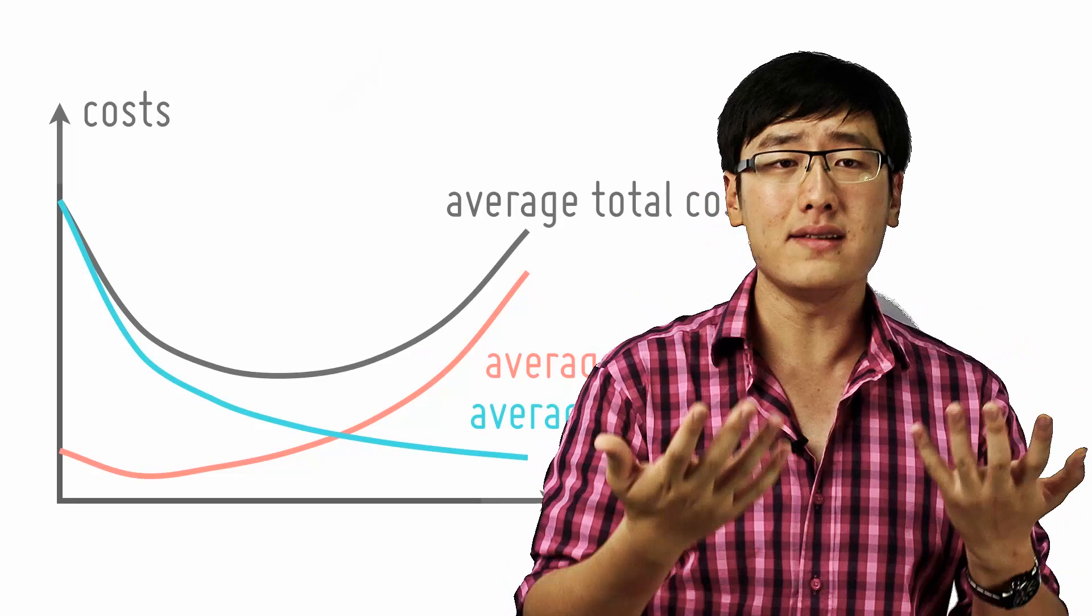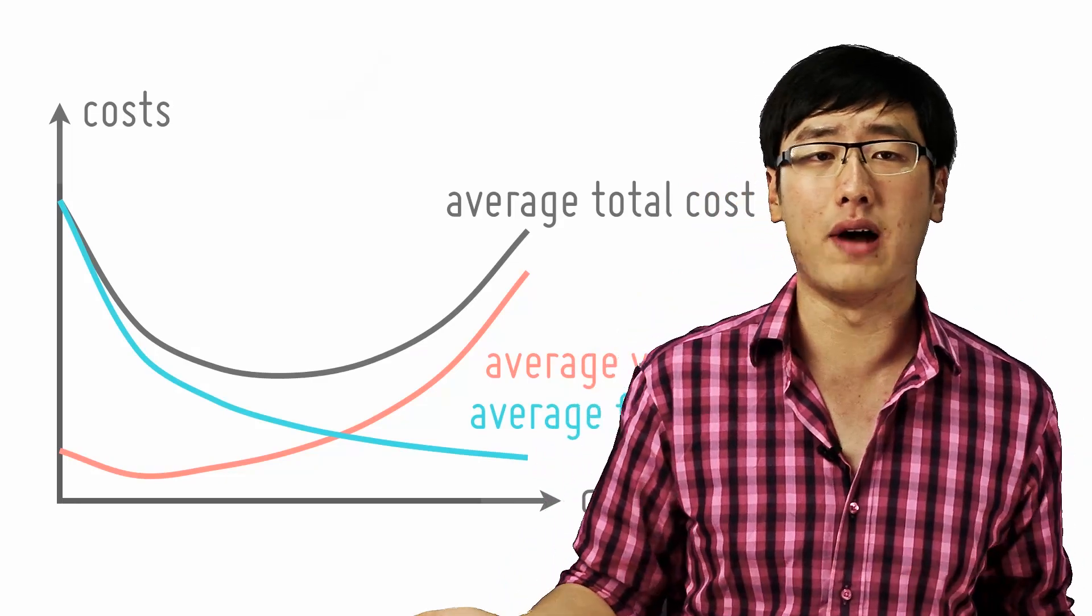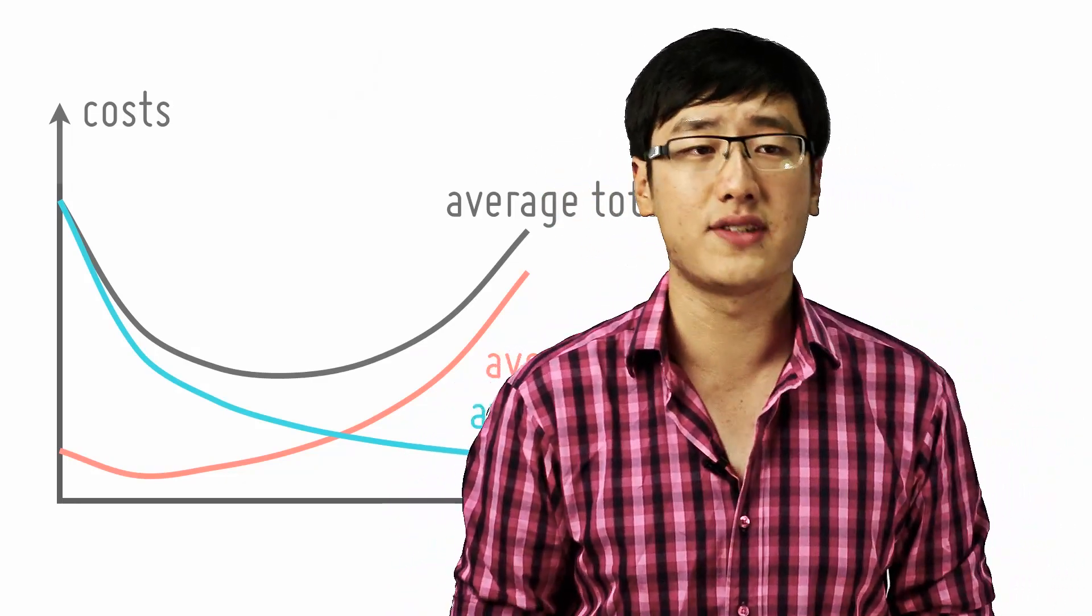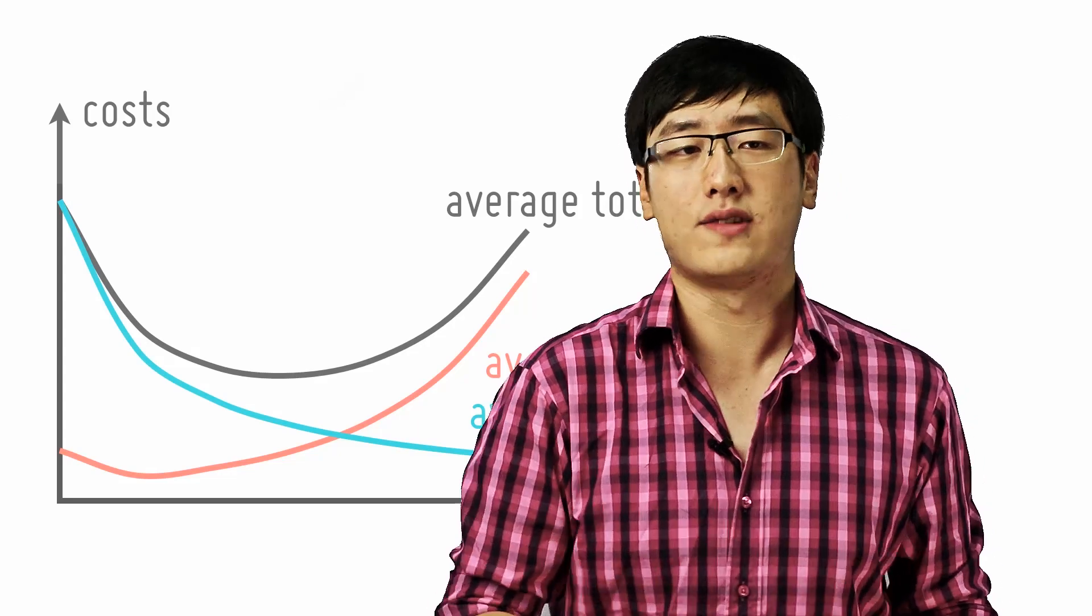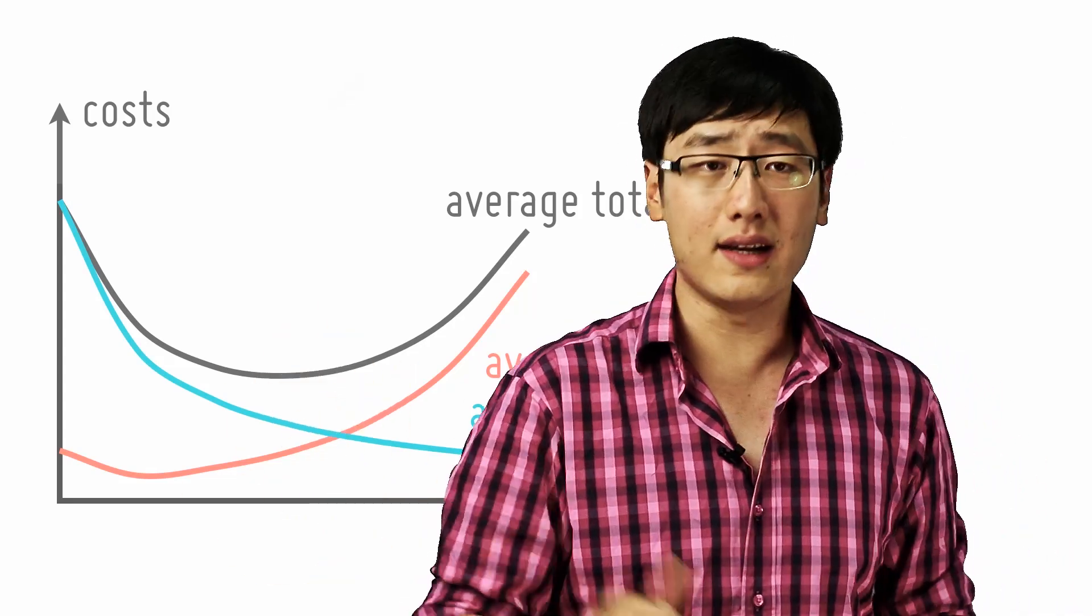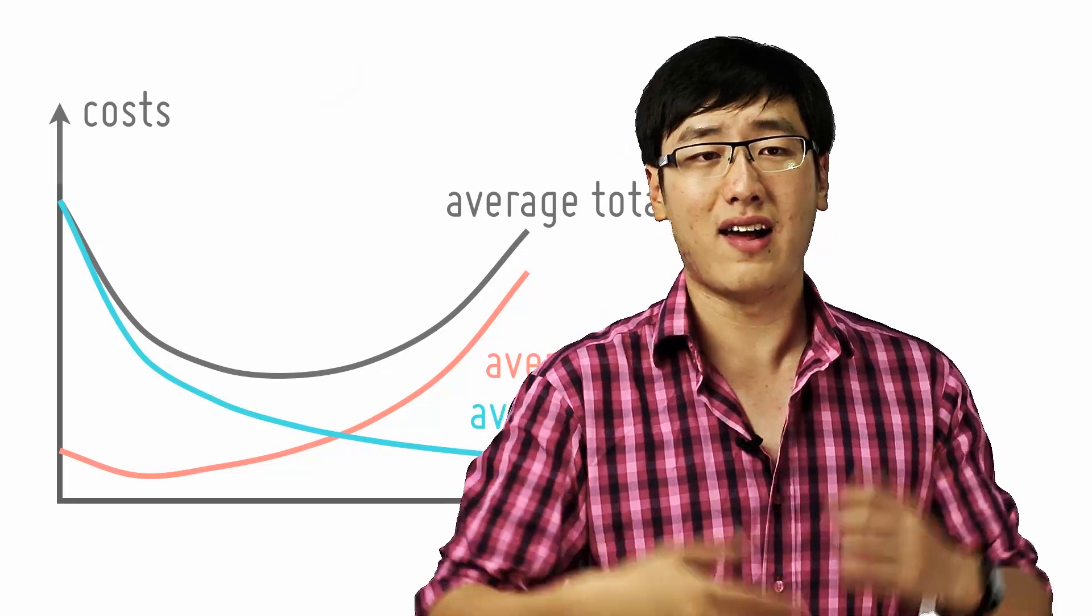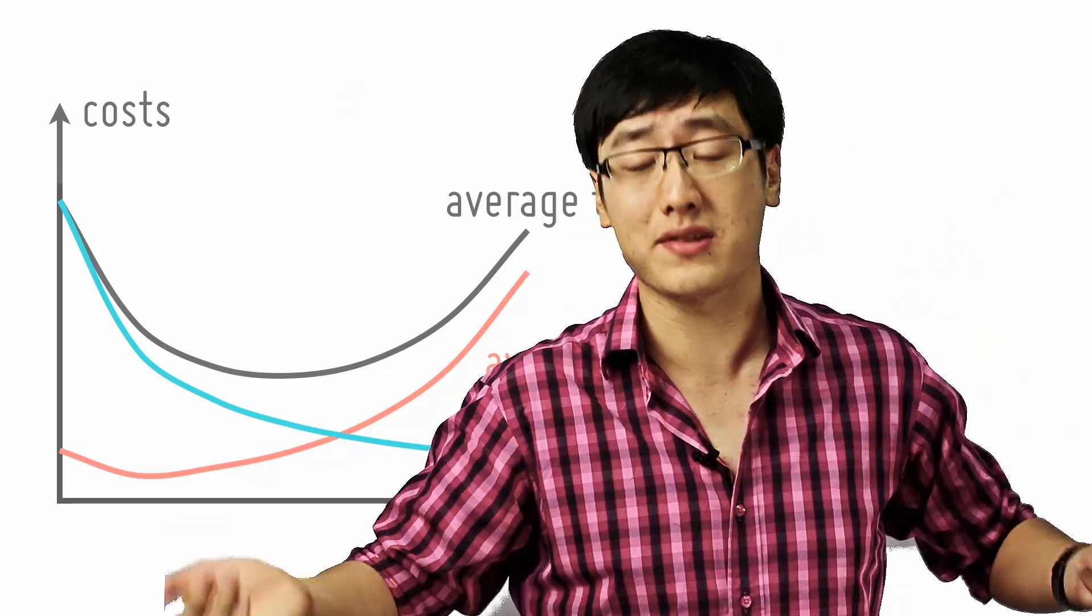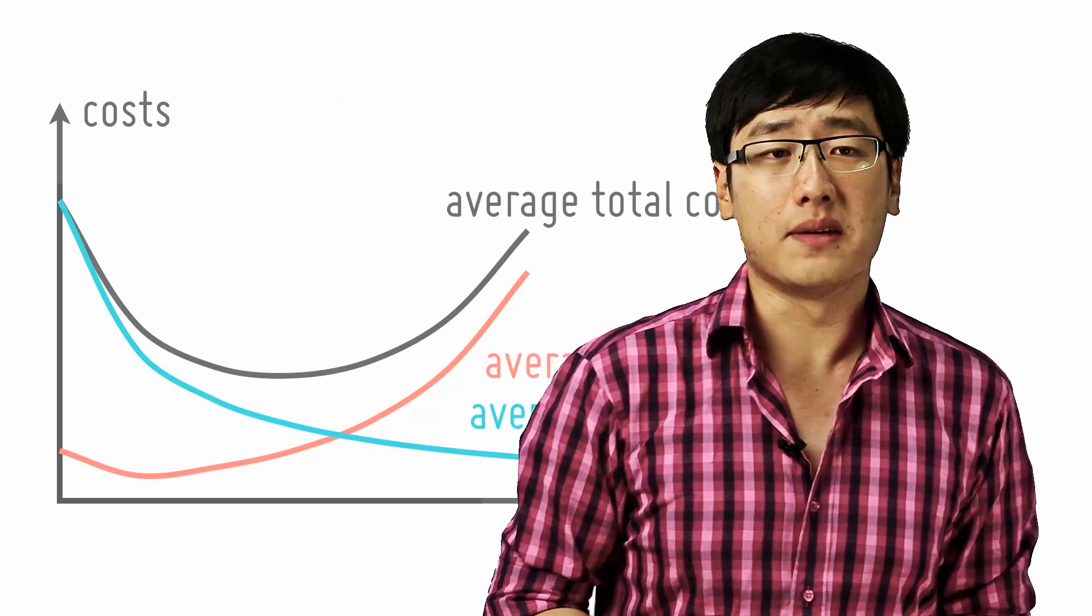But the AC is basically the simple addition of the AVC and the AFC. The average variable cost and the average fixed cost. You realize that the average fixed cost decreases to nearly zero. Nearly, it never touches because a number divided by an increasingly large number approximates zero but never touches it.